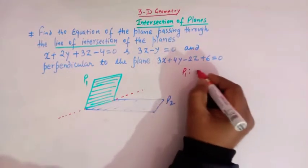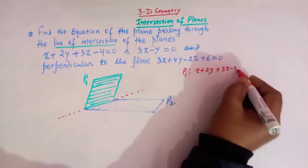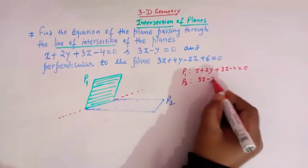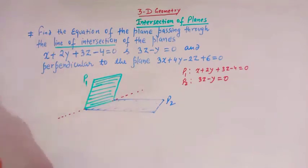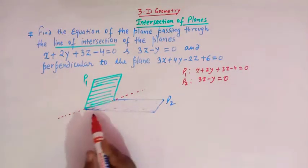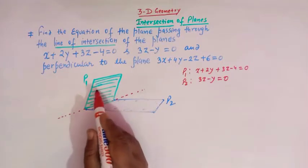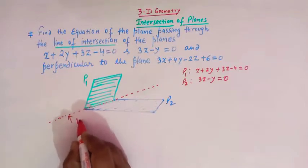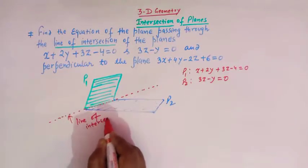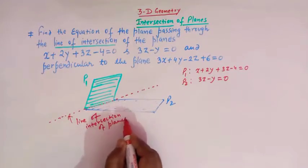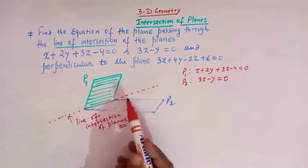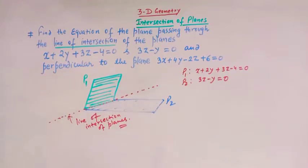The equation of P1 is given as x + 2y + 3z - 4 = 0, and the equation of plane P2 is given as 3z - y = 0. We have to find the equation of a plane which passes through the line of intersection of these two planes. Always remember that whenever two planes intersect, they intersect in a line, and whenever two lines intersect, they intersect in a point. The intersection of two planes is always a line.